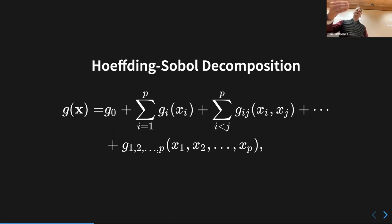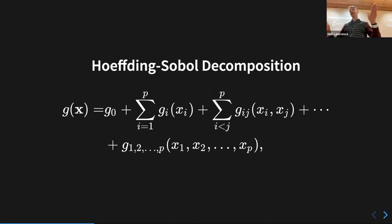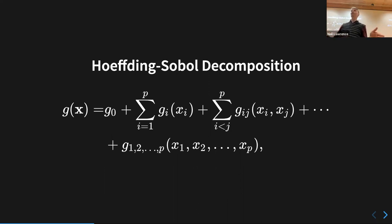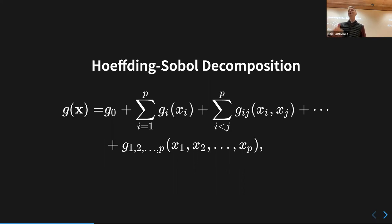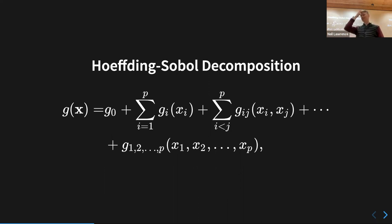In statistics, p is used to represent dimensionality of the input. In machine learning you'll typically hear people using d. I started using p to be taken more seriously by statisticians. You'll also hear the 'large p, small n problem' in statistics — when you have many features and few data points.